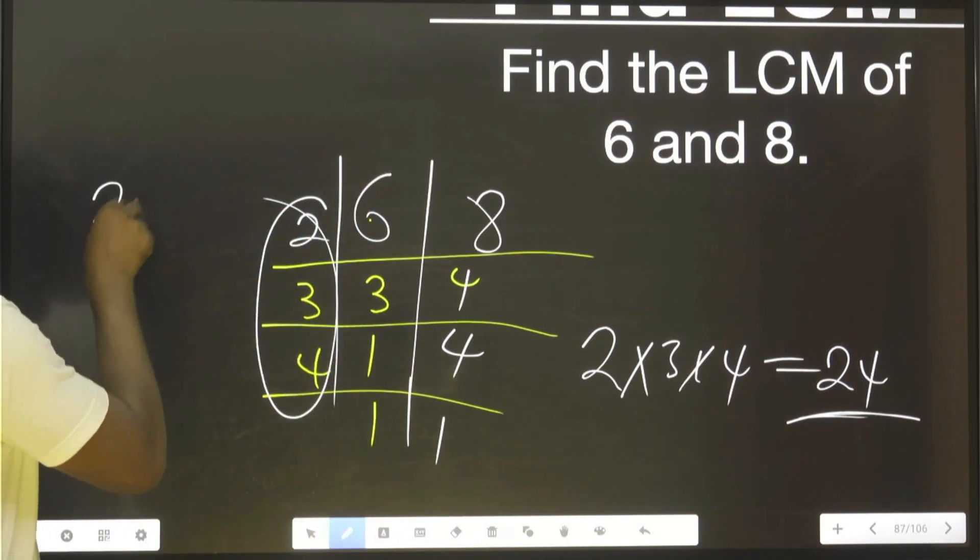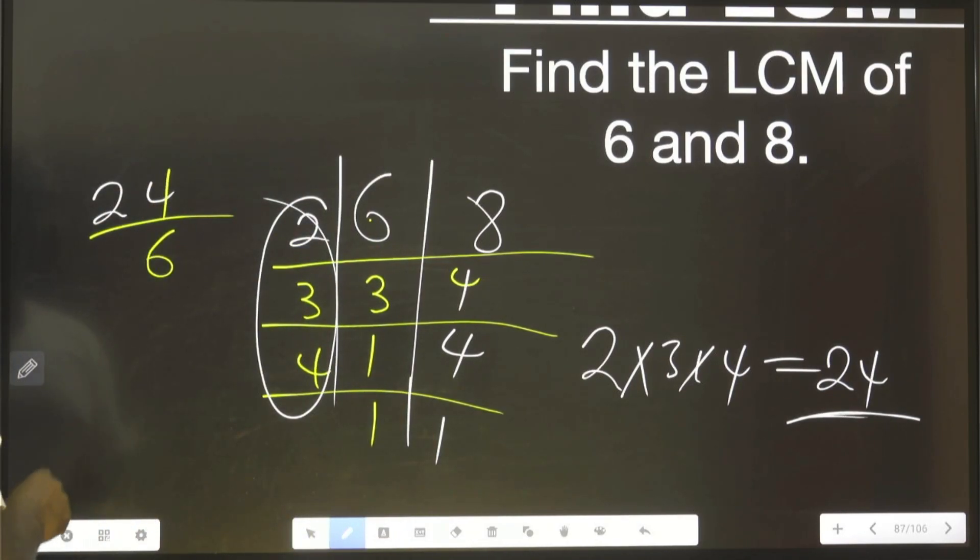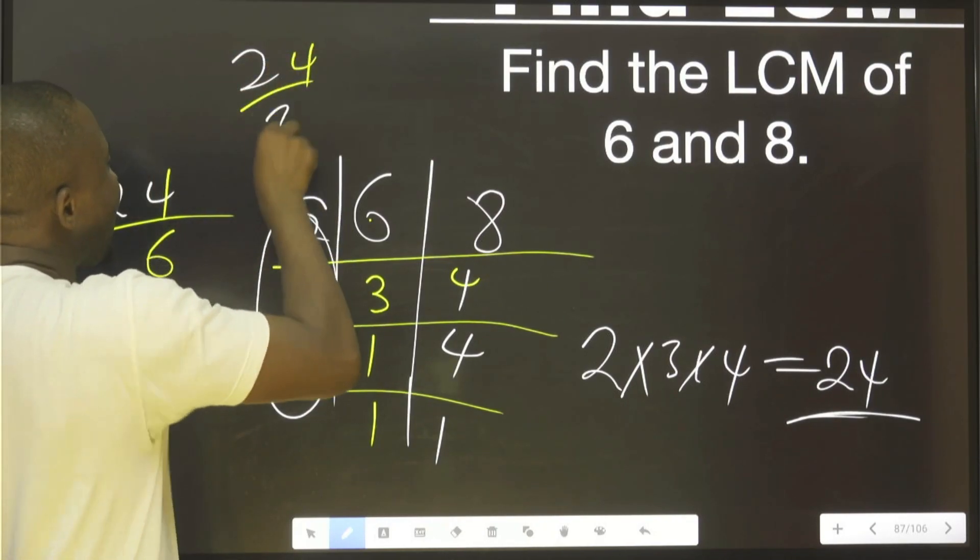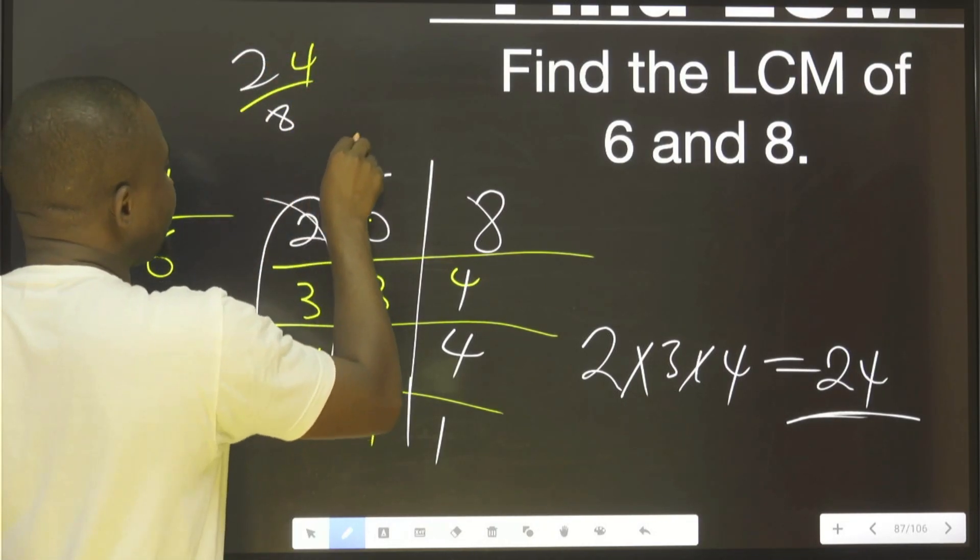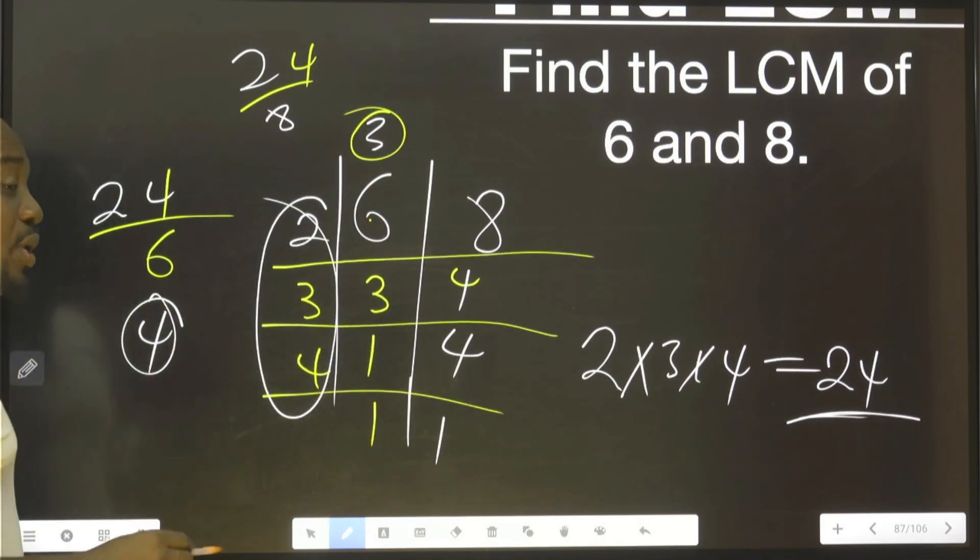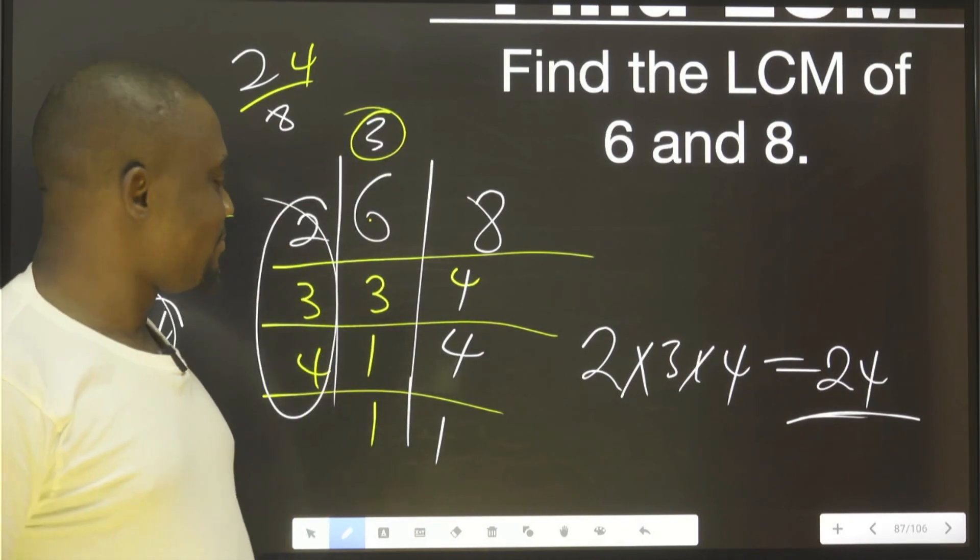That means 24 divided by 6. You agree with me, you are going to have 4. 24 divided by 8, you agree with me, you are going to have 3. No remainder. Okay?